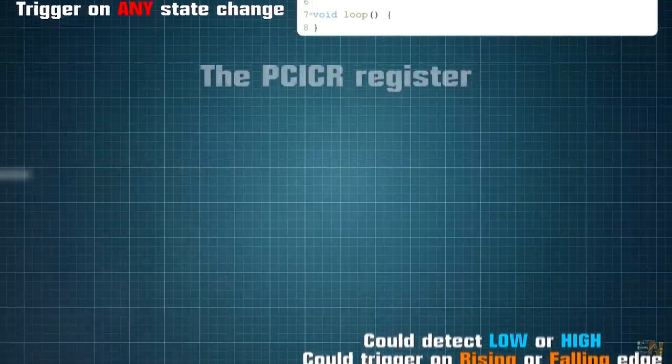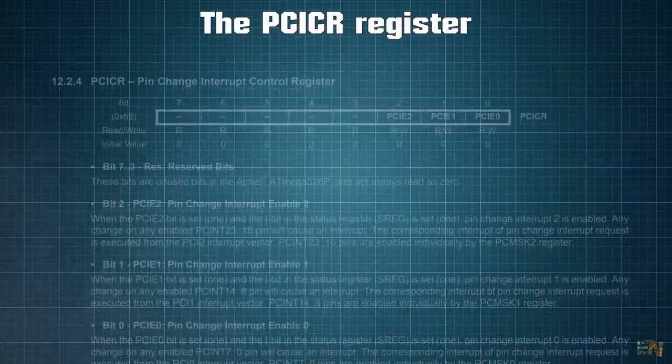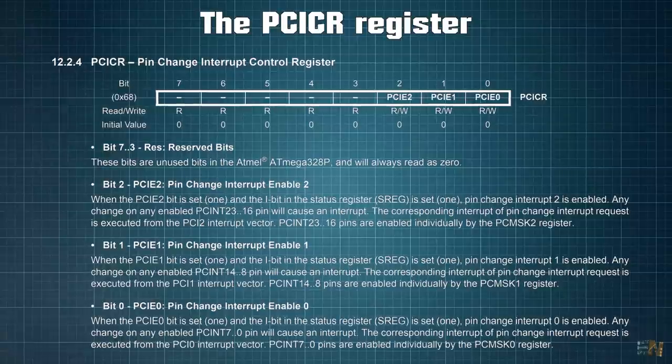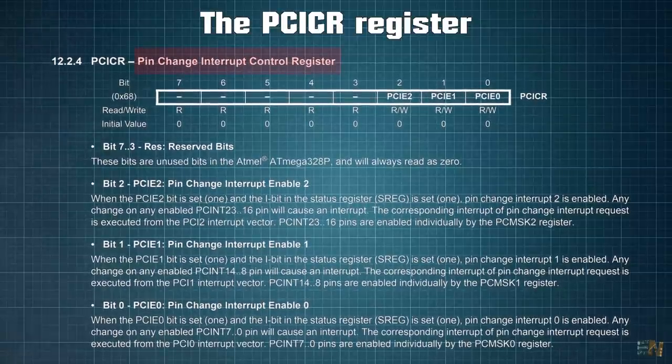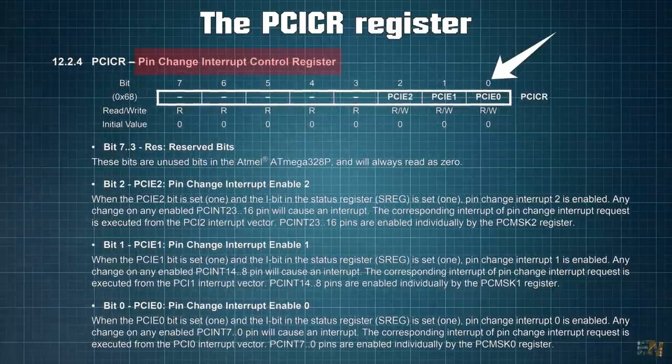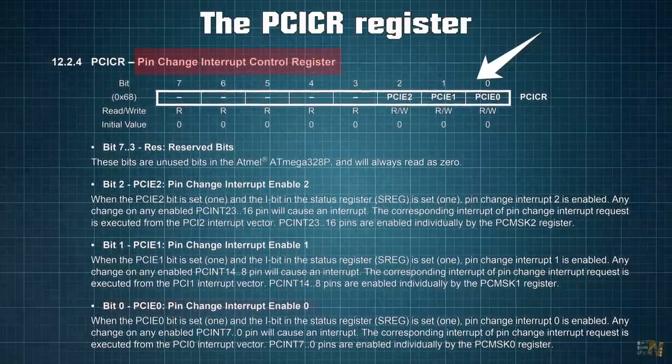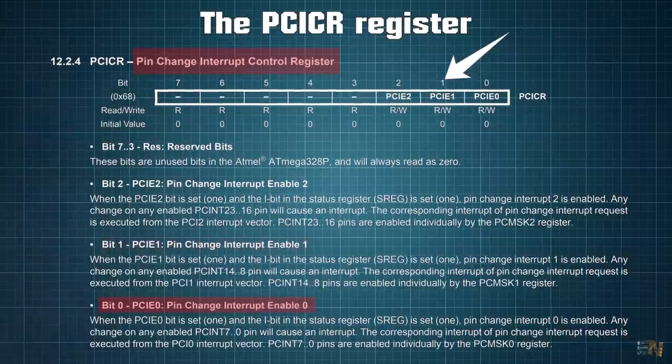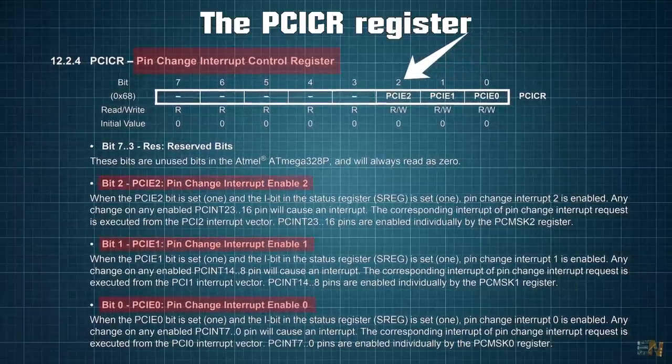We can activate or deactivate PCINT associated to one group of pins using the PCICR register, standing for the pin change interrupt control register. We use the first 3 bits of this register, where bit 0 is the PCIE0, bit 1 is for PCIE1 and bit 2 is for PCIE2.